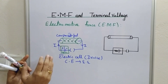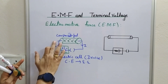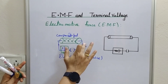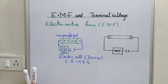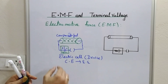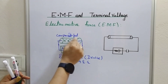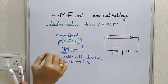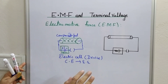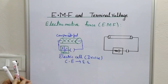In an open or broken circuit, there will be no external current. A closed circuit is a circuit where there is a closed path of electric current. An open circuit is a circuit where there is no electric current in the external circuit.